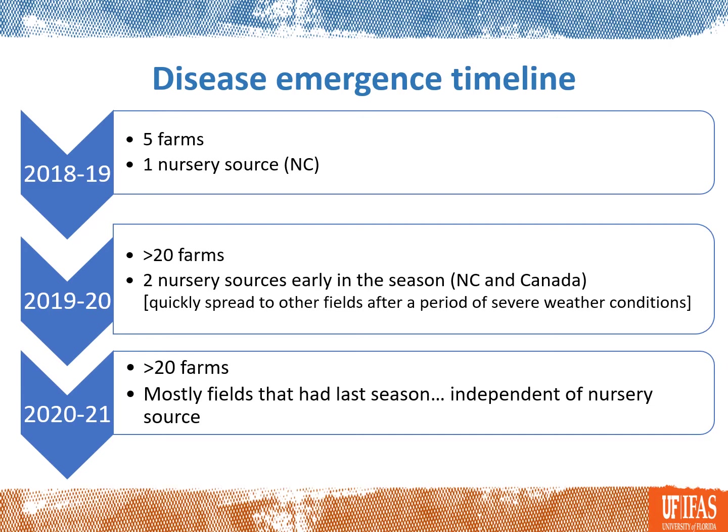I would like to spend a minute now going over the timeline on the emergence of this disease. We first had a significant problem in the 2018-19 season — basically five farms at that time — and the common link among those farms was the nursery source, which was the same nursery in North Carolina. Moving forward, the 2019-20 season we had a significantly higher number of farms with a problem, but again it was easy to see, particularly early in the season, a link with nursery source. In that case there were two nurseries that had an issue: the same nursery in North Carolina as well as a nursery in Canada that got plant stock from the North Carolina nursery.